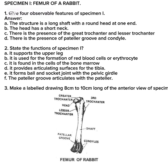Specimen I is the femur of a rabbit. Likely questions: number one, list four observable features of Specimen I. Answers: the structure is a long shaft with a round head at one end; the head has a short neck; there is presence of the greater trochanter and lesser trochanter; there is presence of the patellar groove and condyle.